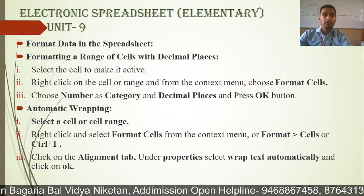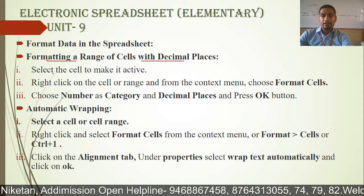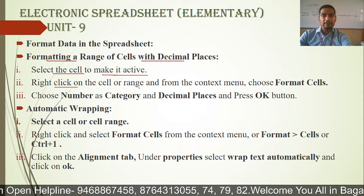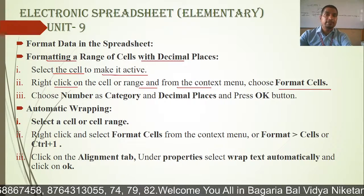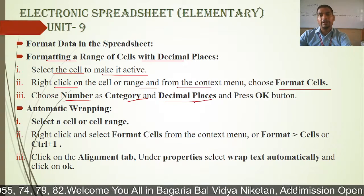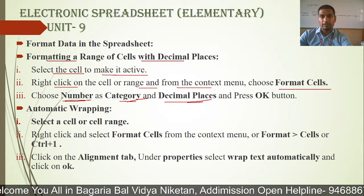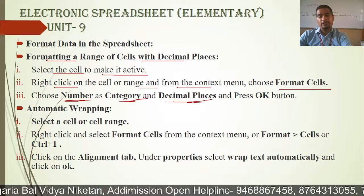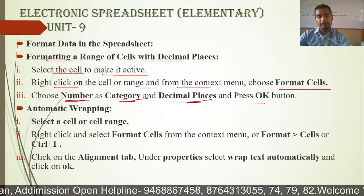Next, formatting a range of cells with decimal places. You can set decimal places by selecting the cell to make it active, then right-clicking on the cell or range. From the context menu, choose Format Cell. Choose Number as a category. In the option category, you will find decimal places where you can set the number of decimal places.